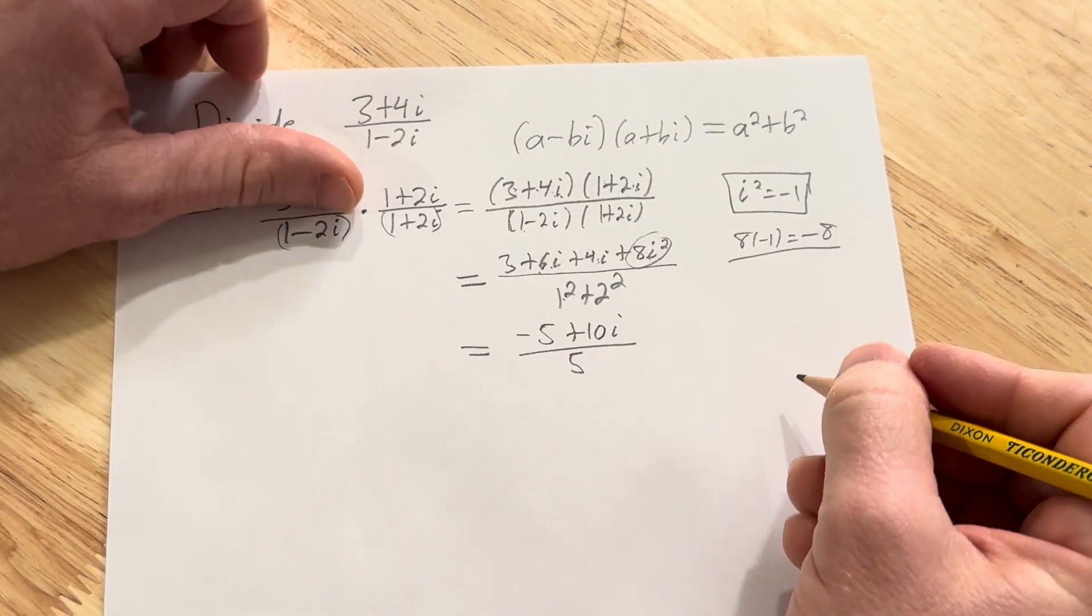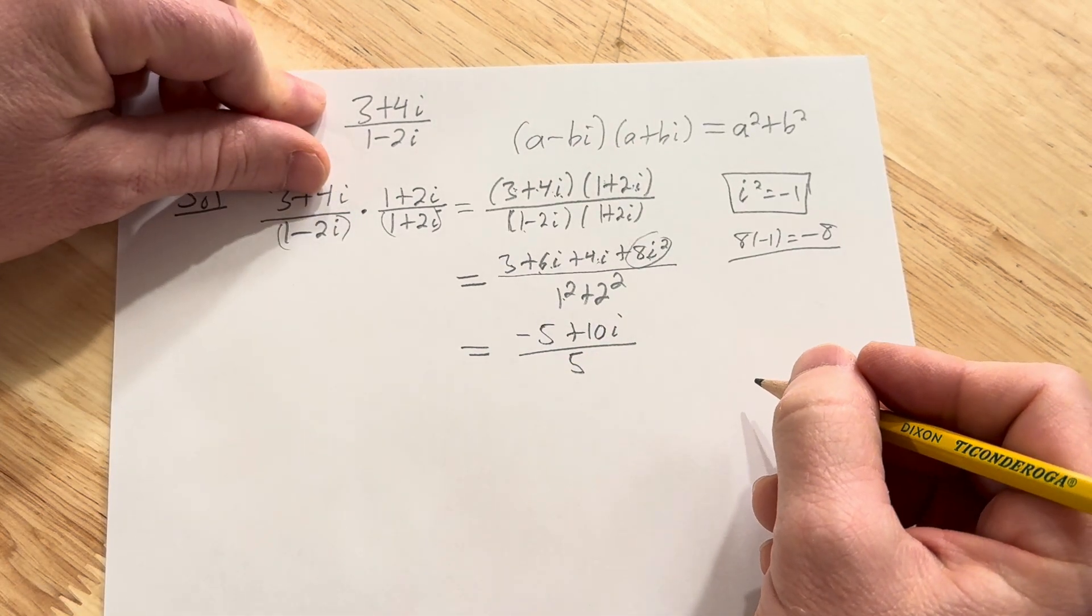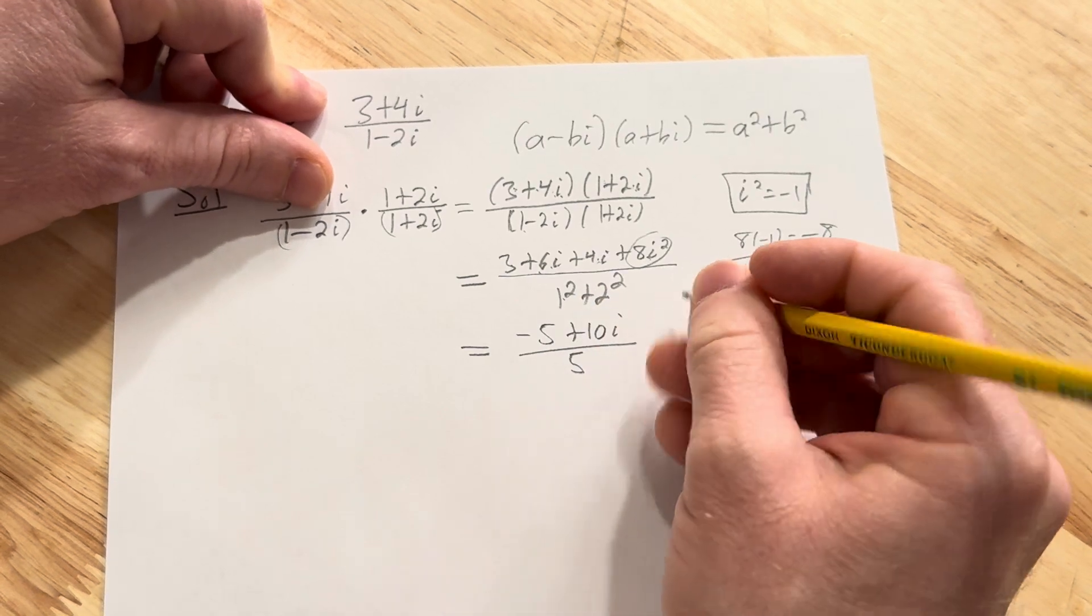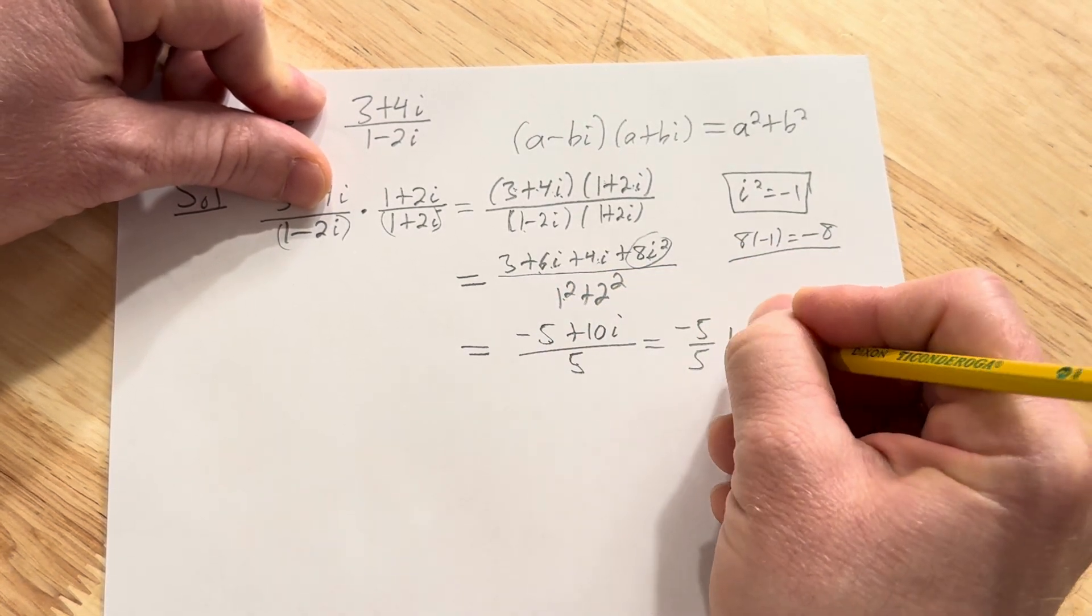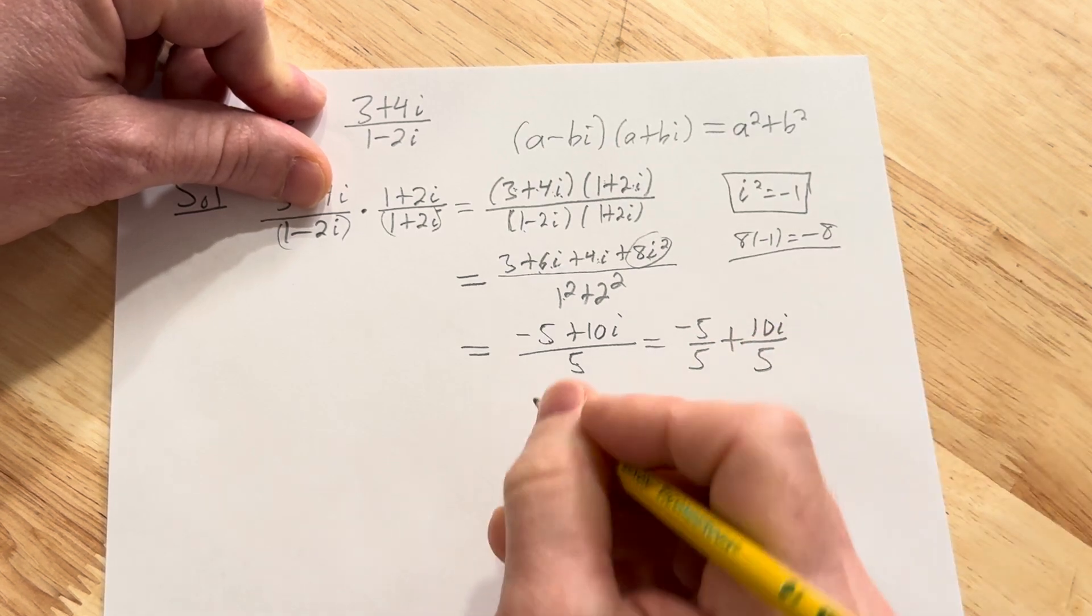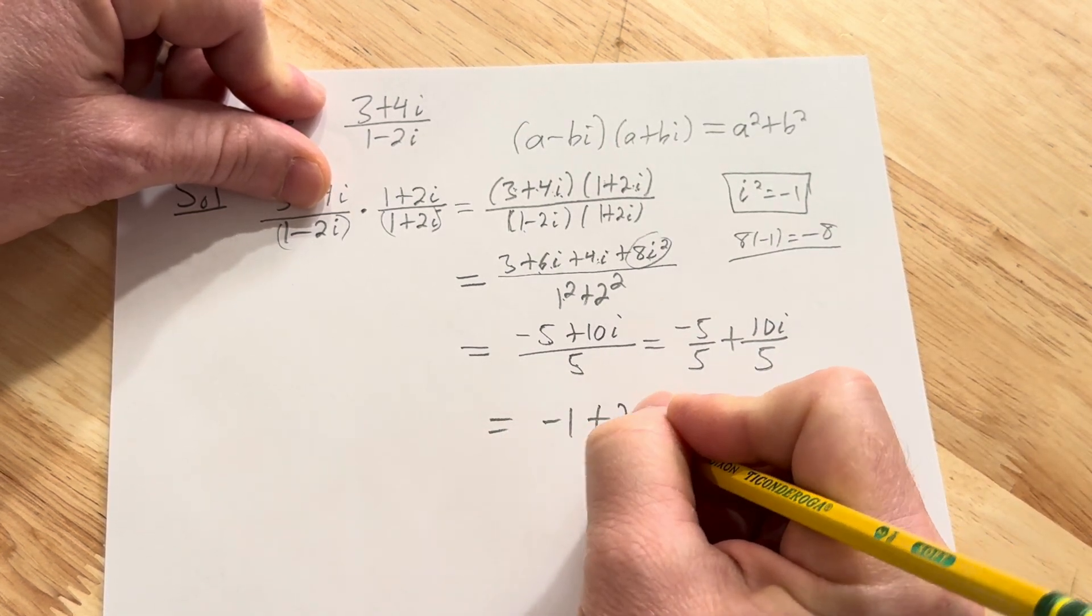Oh look at this! Oh happy day. Look we can simplify this. So we can write this as negative 5 over 5 plus 10i over 5. So this is equal to negative 1 plus 2i.